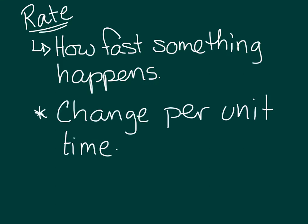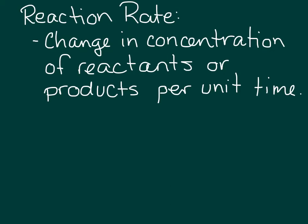So what you're really measuring is a change per unit time. When we're talking about the rate of a chemical reaction, we're actually measuring the change in the concentration of either reactants or products over the course of time.